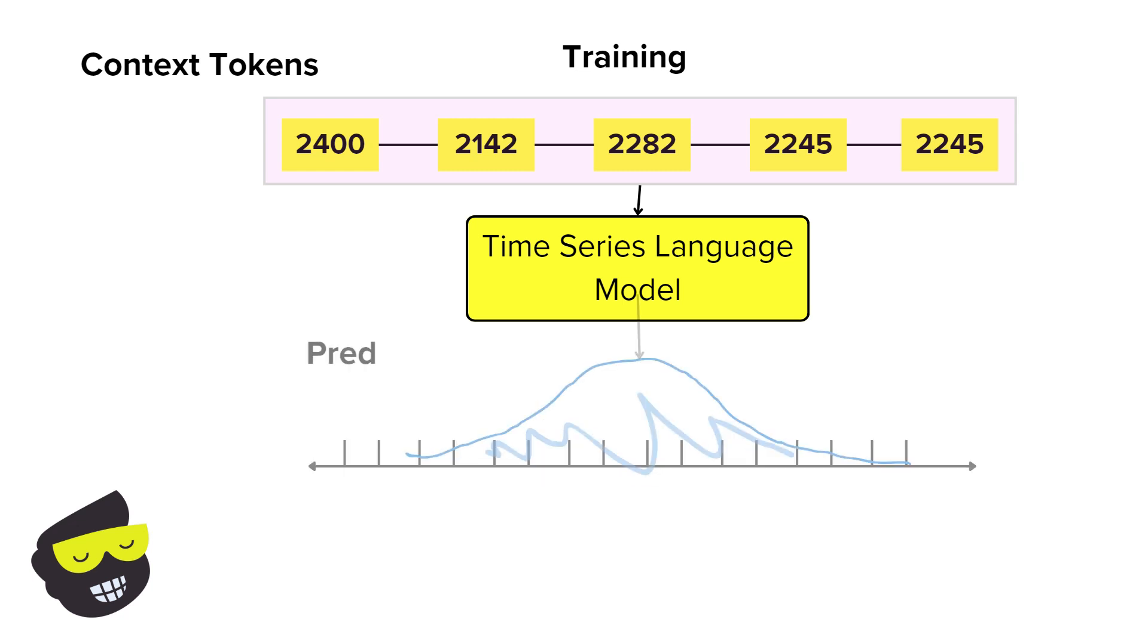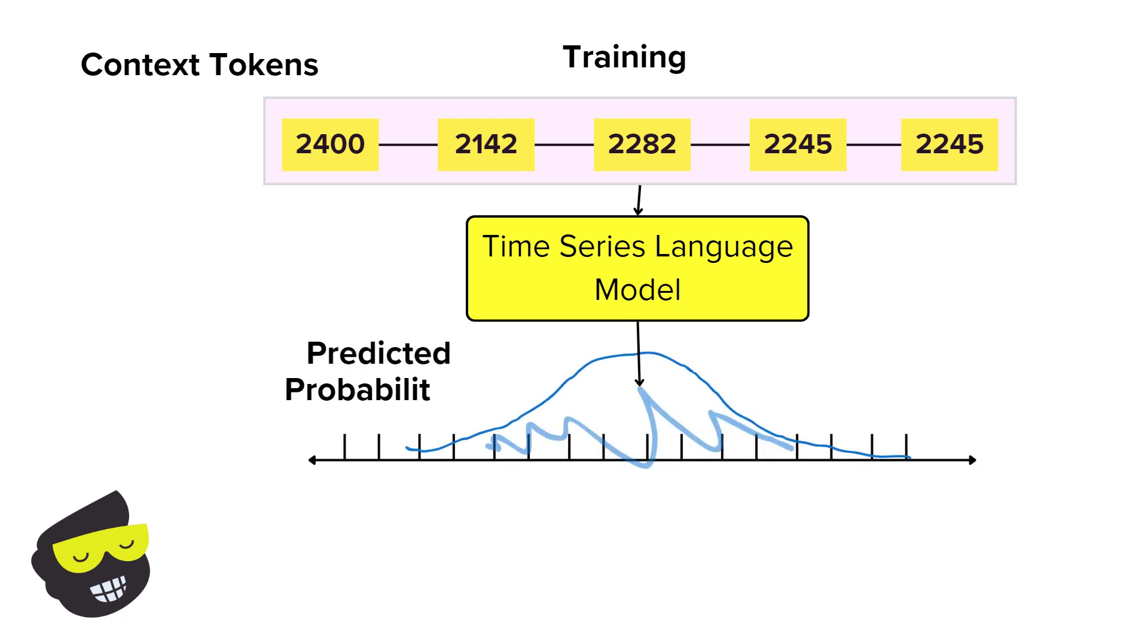Then we have the predicted probabilities. They represent the likelihood of each possible next token in the sequence. When the model receives context tokens, it processes them through the language model to generate a set of probabilities for the next token. And then each token has a specific probability, reflecting how likely it is to follow the given sequence based on the model's understanding.